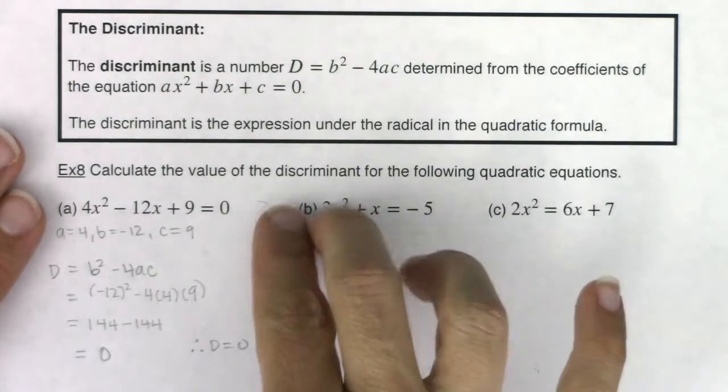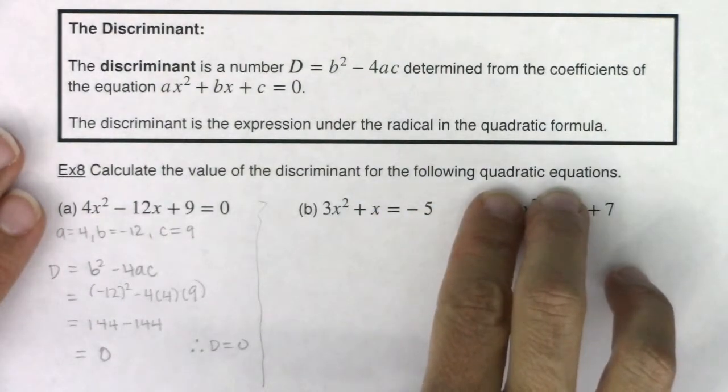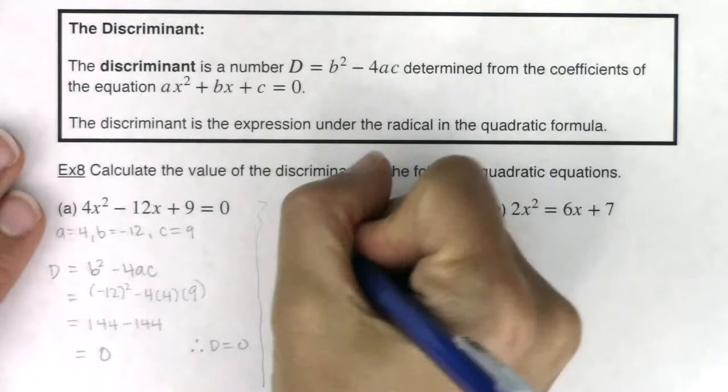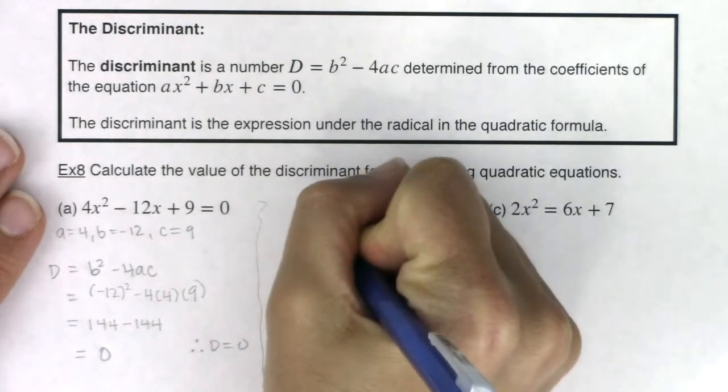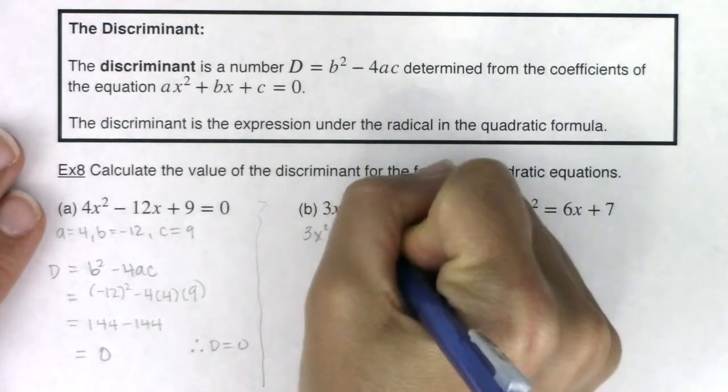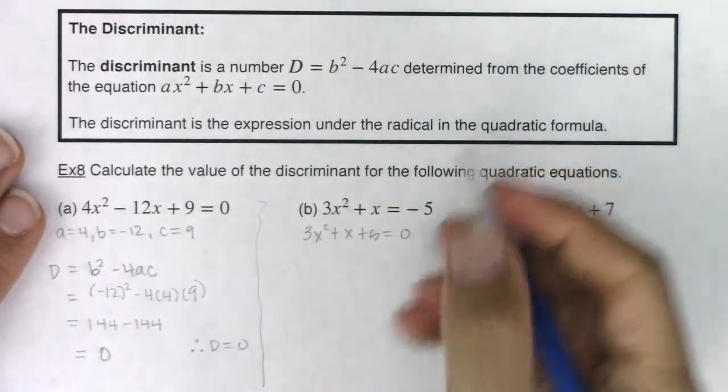Now again, you can either move the 5 over or you can move the 3x squared and the x over, but you need to set your equation equal to 0. So here I have 3x squared plus x plus 5 is equal to 0.